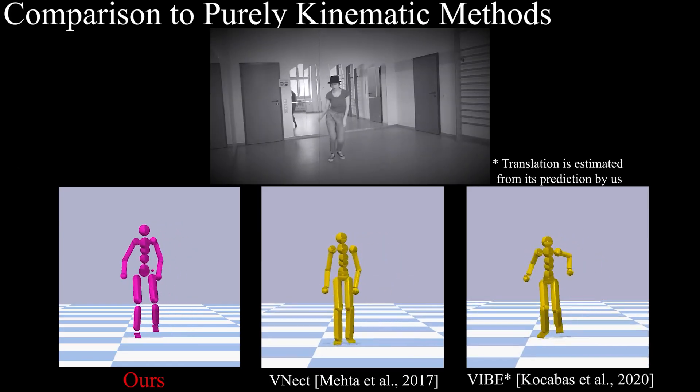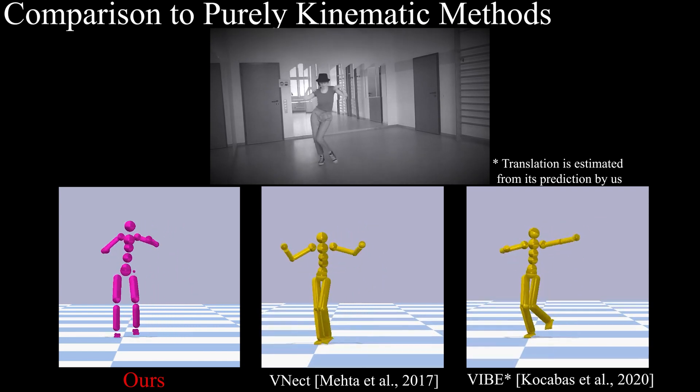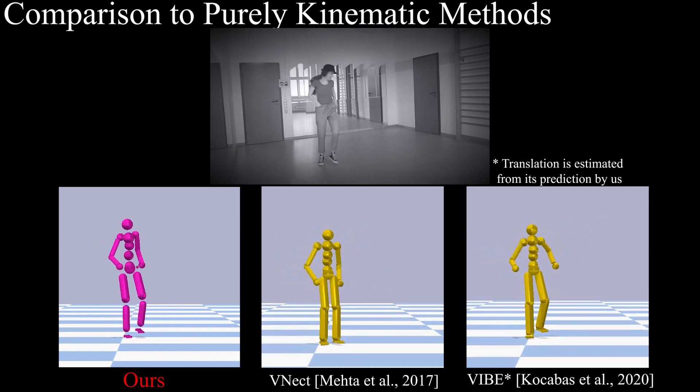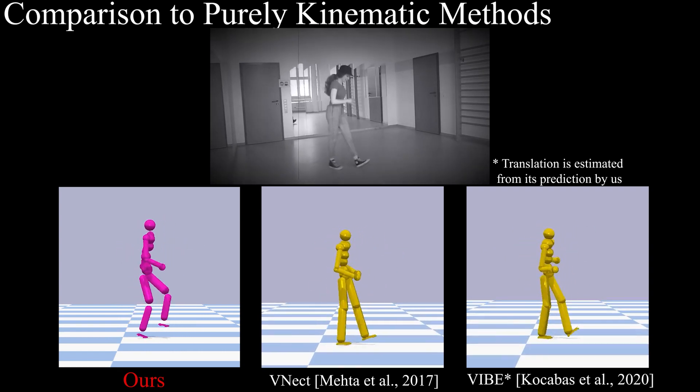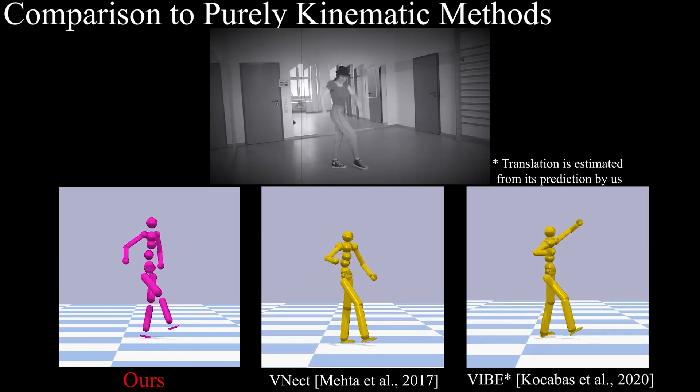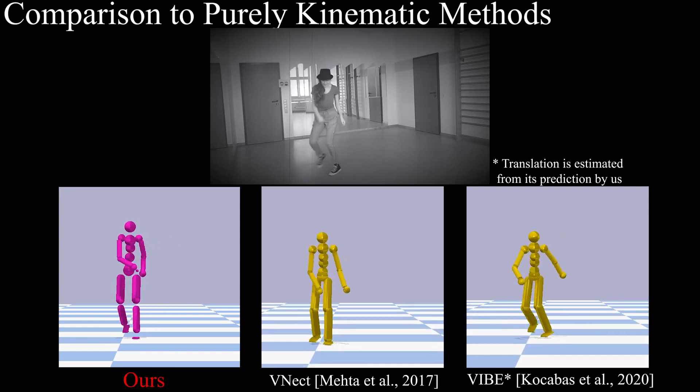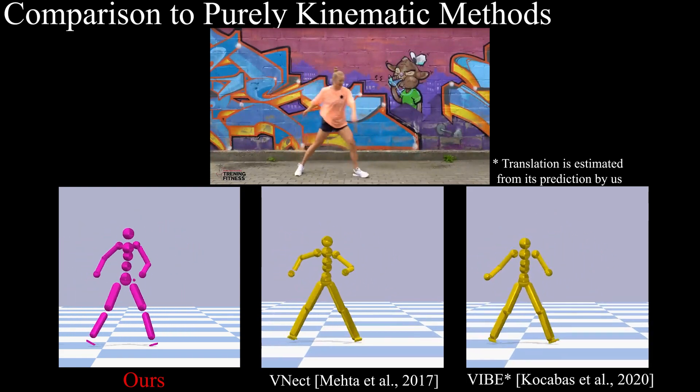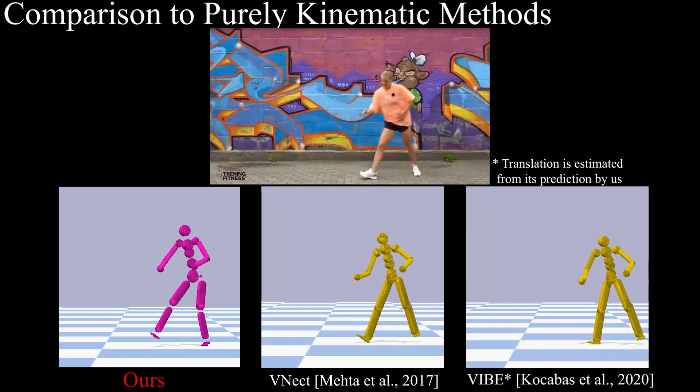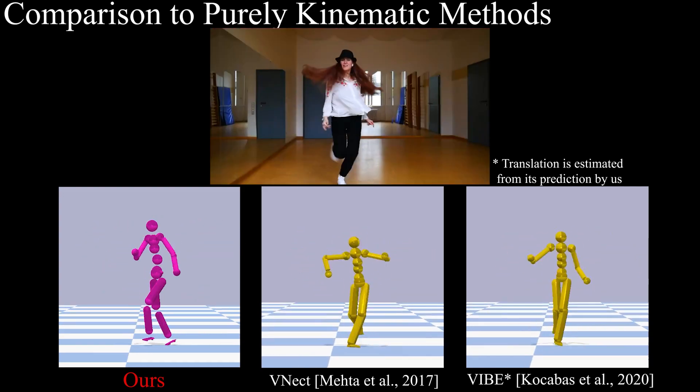We next show the comparisons to existing state-of-the-art methods. Our reconstructed 3D motions are much smoother than purely kinematic results, and look biomechanically plausible, even for challenging dancing motions, as can be seen here. The reconstructions of both Finact and Vibe are jittery, and would require post-processing to drive a virtual character. In contrast, our result can be directly used to drive a character.